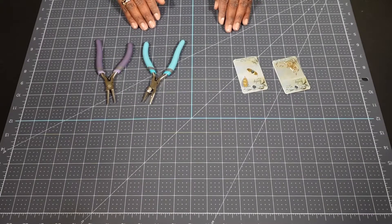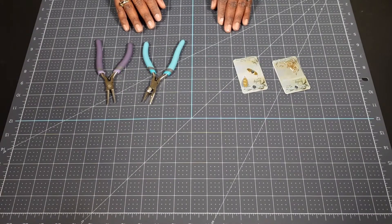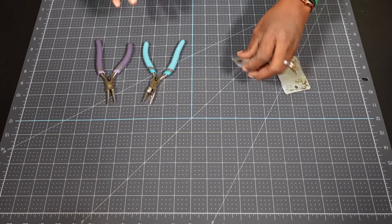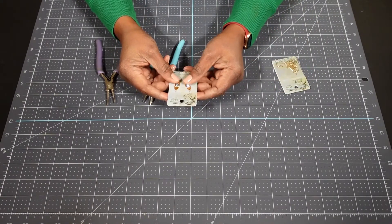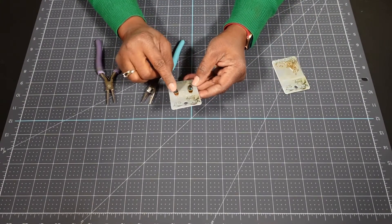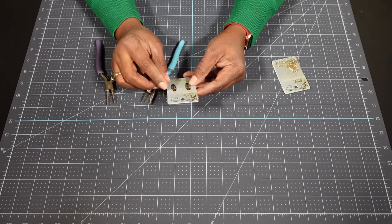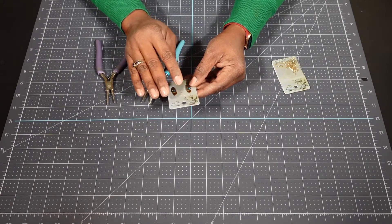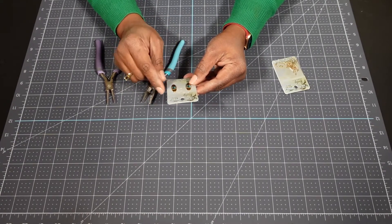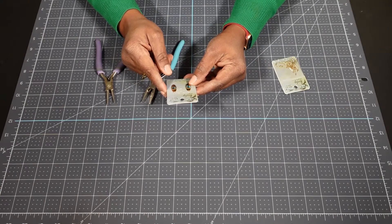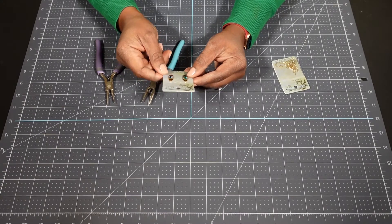All right, to make our earrings we need a couple of things. So the first thing that we're going to need are two small pendants. You can typically find very small pendants in stores like Hobby Lobby or Michaels and they usually have them together on the same piece of backer. If they don't, you can always get two that look exactly the same if they're not on the same backer.